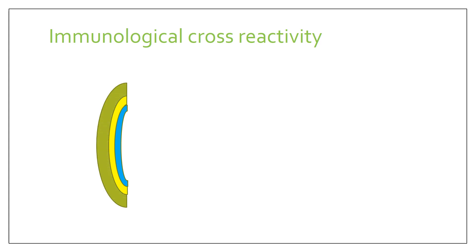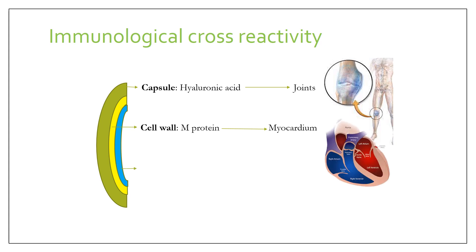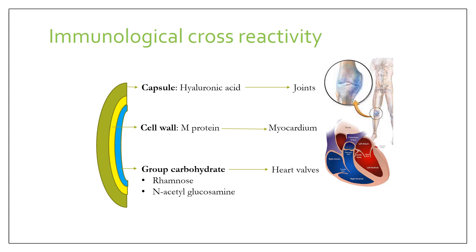The group A beta-hemolytic streptococcus has a cell wall with three layers. The first layer is the capsule, the main component of which is hyaluronic acid, and it has cross-reactivity with the joints of the human system. The next layer is the cell wall, which has the main antigen — the M protein — and it cross-reacts with the myocardium. The innermost layer is the group carbohydrate, which has two important antigens: rhamnose and N-acetylglucosamine, which cross-react with the valves.